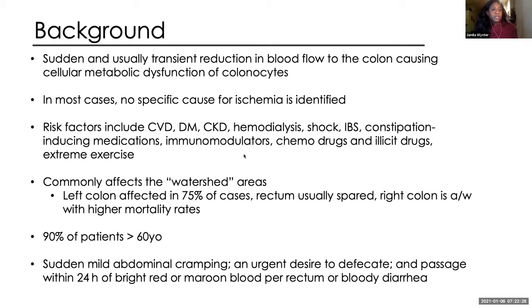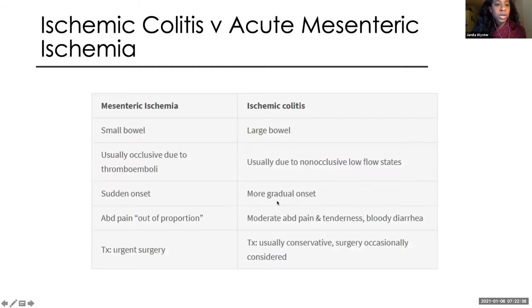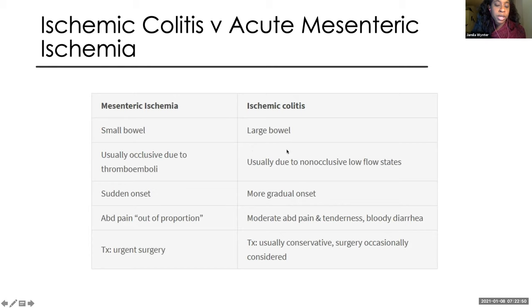Sudden mild abdominal cramping with a sudden desire to defecate and passage of bright red blood per rectum within 24 hours, often associated with bloody diarrhea. I briefly wanted to contrast ischemic colitis with acute occlusive mesenteric ischemia because I feel like these two terms are common misnomers and are used interchangeably, although they're two distinct disease processes.